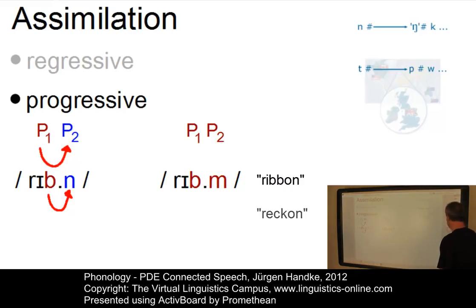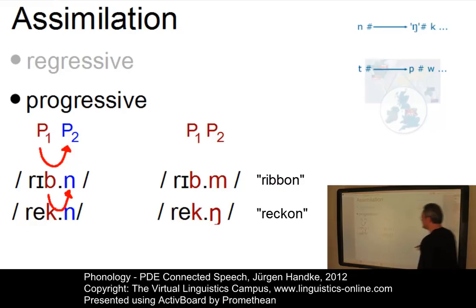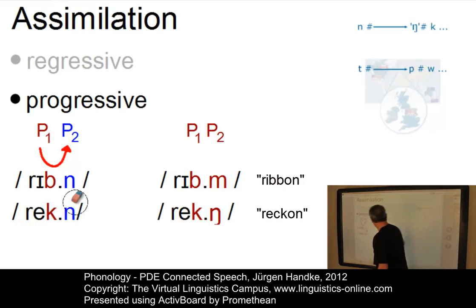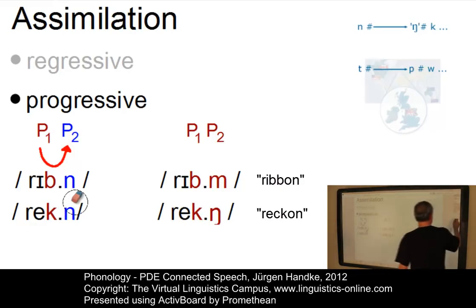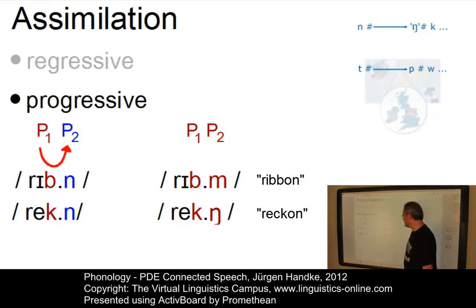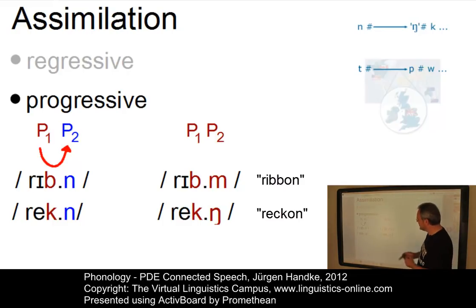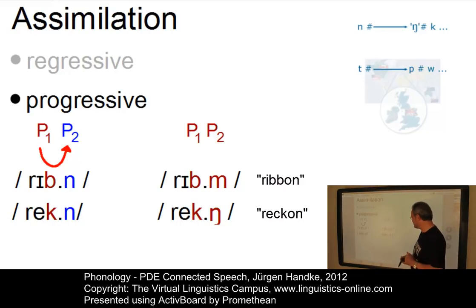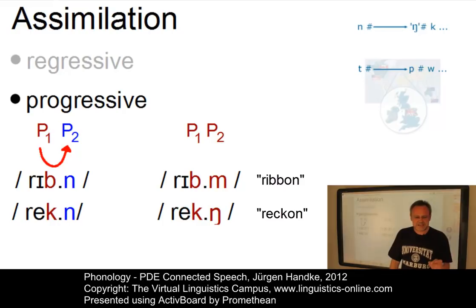Another example is 'reckon', where the final velar plosive influences the alveolar nasal — the syllabic N. And the result will not be 'reckon' with an alveolar nasal, but 'reckon' with a velar nasal.